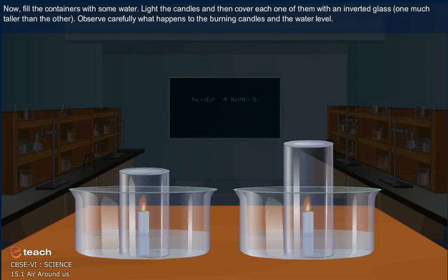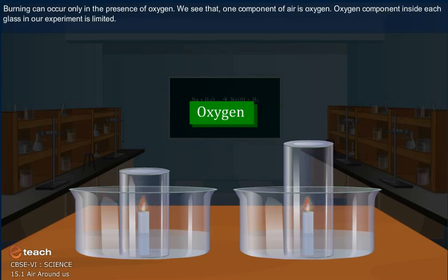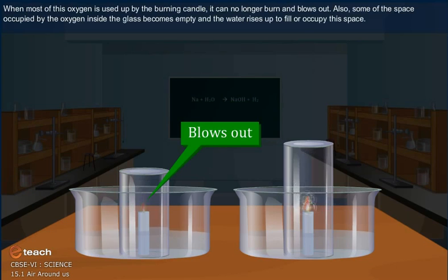Observe carefully what happens to the burning candles and water level. Burning can occur only in the presence of oxygen. We see that one component of air is oxygen. Oxygen component inside each glass in our experiment is limited. When most of this oxygen is used up by burning the candle, it can no longer burn and blows out.